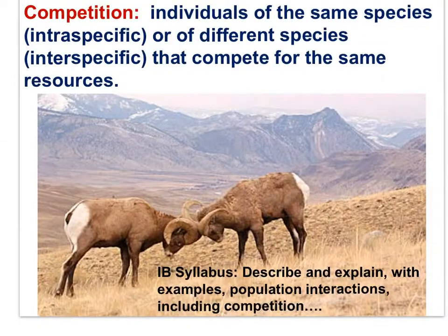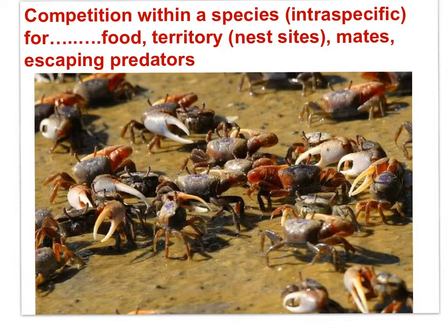In this photograph, there are two individuals of the same species competing for resources. In this case, the resource is females with which these males could mate. This is intraspecific competition, as the two individuals are from the same species. Here again is intraspecific competition — competition within a species — for food, territory, nest sites, mates, possibly competition to escape predators.